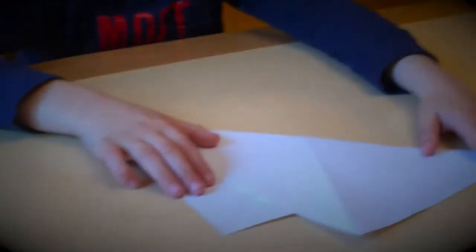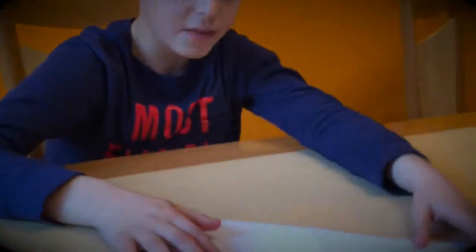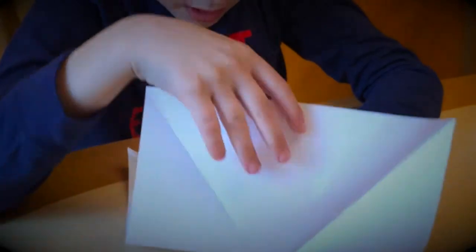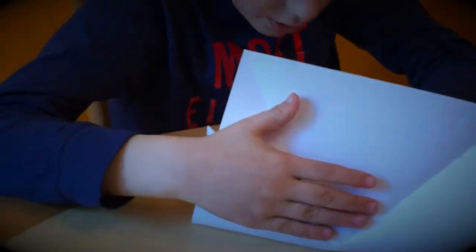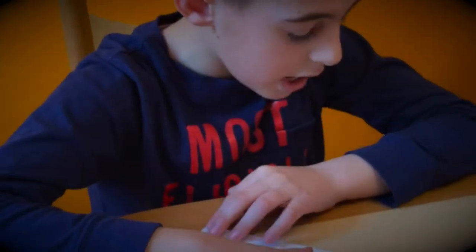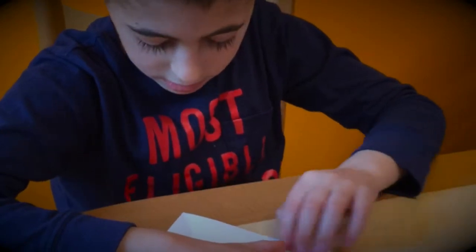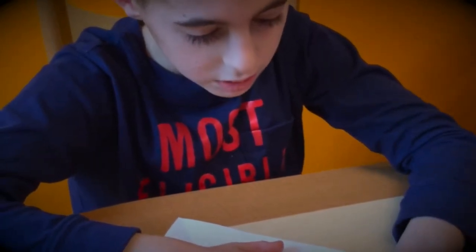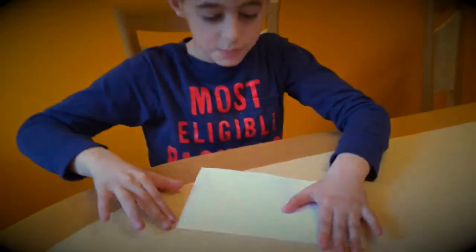Now we have to unfold it and then flip it over. Now we are going to flip the top side right in the middle and down to the bottom so that the edges are lined up correctly. We are going to do the same thing we did in the other one. Good, it's straight.